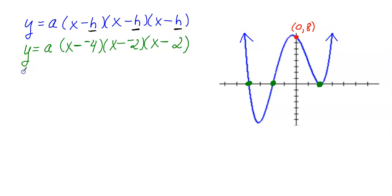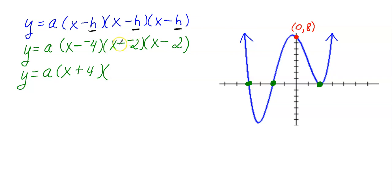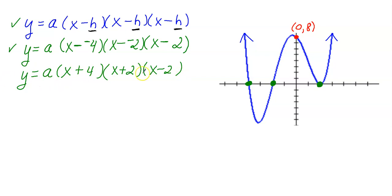Now we need to simplify because we have double signs. Bring down your A. X minus a negative 4 is the same as X plus 4 — when you subtract a negative, it turns positive. Similarly, X minus a negative 2 becomes X plus 2. And the last term has no double negative, so it stays as X minus 2. I always do these first steps so I don't get confused with signs. Once you get better, you can skip to writing the equation directly with A in front.